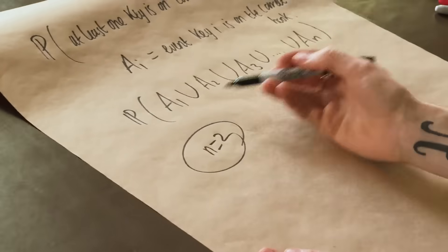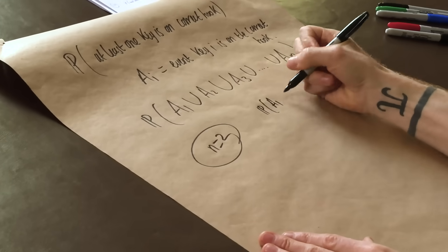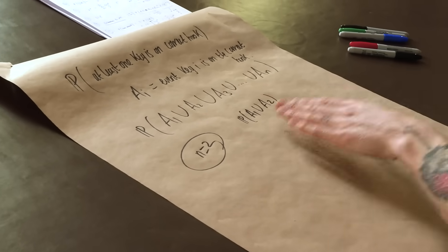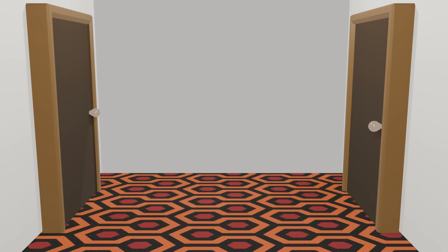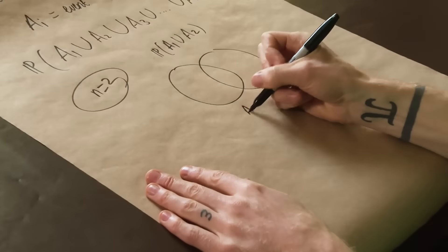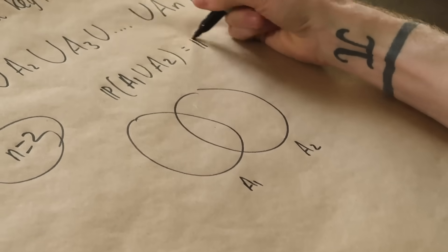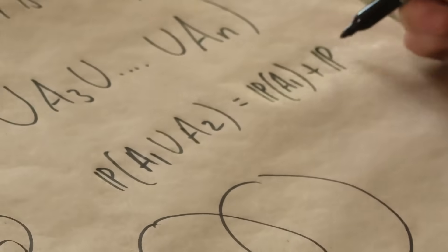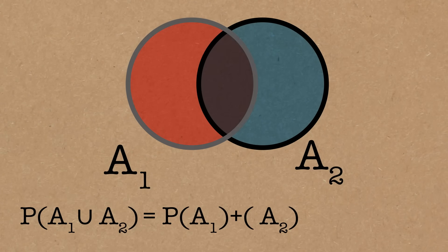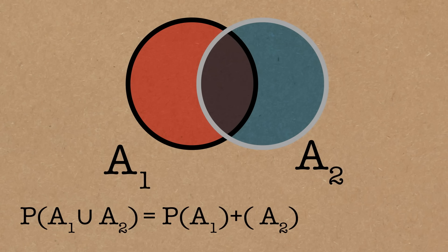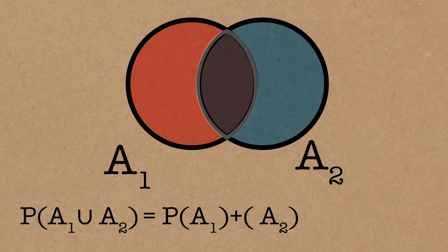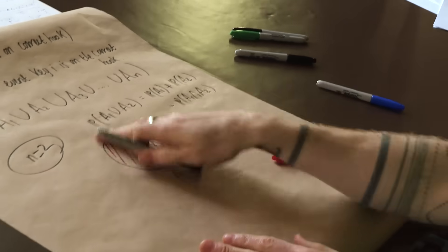If we have n equals 2, we're interested in the probability of a_1 or a_2 being true. So we'll draw our Venn diagram. This is a_1, this is a_2. A good place to start is to say this is the probability of a_1 plus the probability of a_2. But we've counted a_1, which is all of this, and then we've counted a_2, which is all of this. So you can see we've double counted the bit in the middle. So we take away the probability of a_1 and a_2.